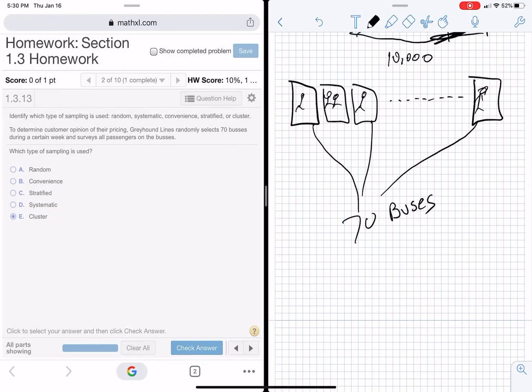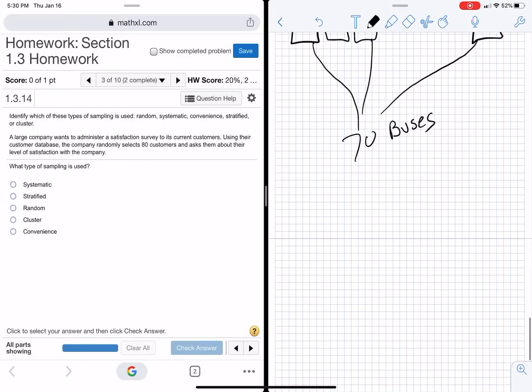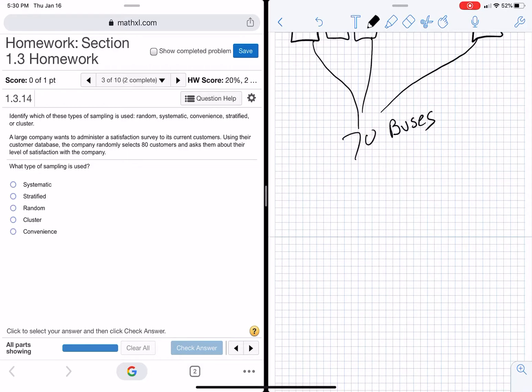You just have to kind of practice these things. Okay, this one doesn't give us much. They don't tell us how they did it, or they used their computer customer. They randomly select 80. They didn't tell us. They didn't do anything. They're just picking 80 of their customers. So that would just be random.